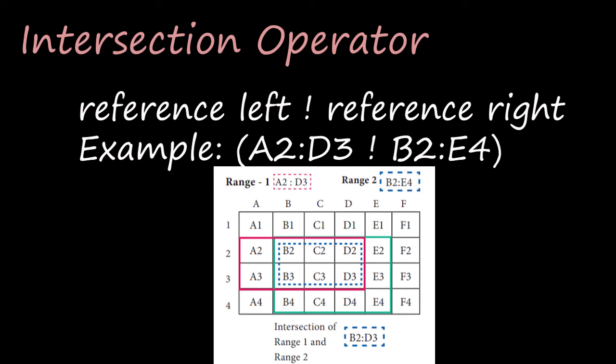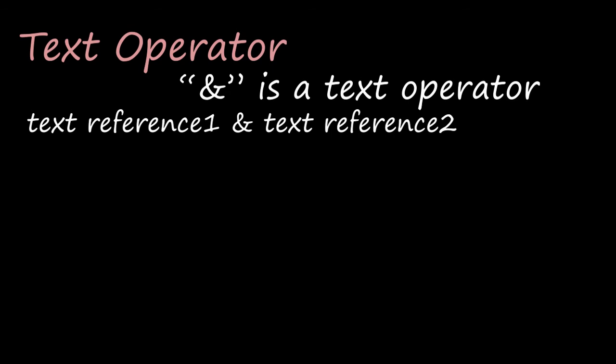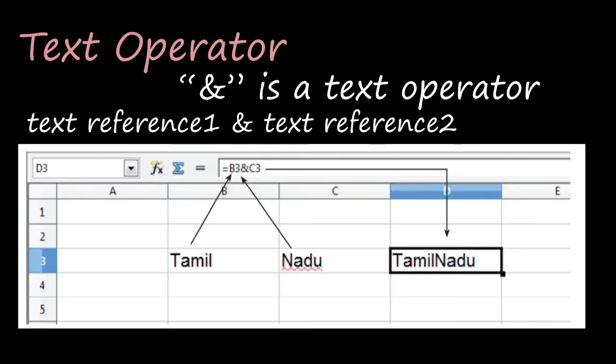The next operator is the text operator. In OpenOffice Calc, a text operator is used to combine two or more pieces of text - joining text is called concatenation. The symbol used is the ampersand (&). The expression syntax is: text-reference-1 & text-reference-2. When you use this ampersand symbol between two cell references, those two cells will be merged and displayed in the cell where you entered the formula.